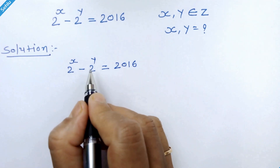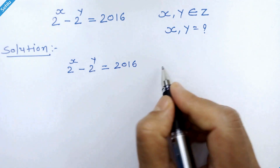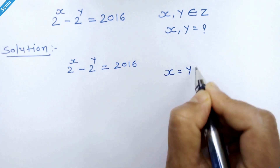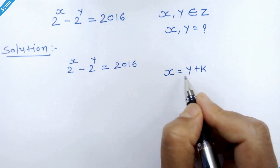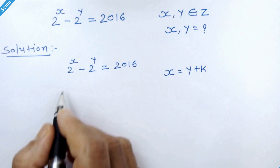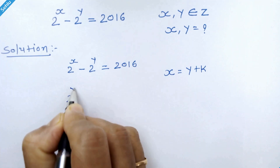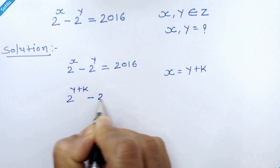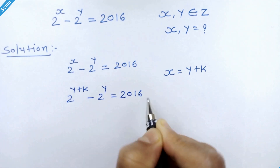As per the question, it is clear that x is greater than y. So let's take x is equal to y plus k, where k is some constant, and replace x with y plus k in the question. So we have 2 raised to y plus k minus 2 raised to y is equal to 2016.